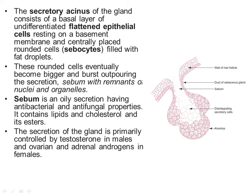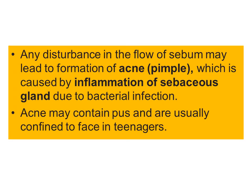The secretory acinus consists of a basal layer of undifferentiated flattened epithelial cells resting on the basement membrane, and centrally placed rounded cells called sebocytes filled with fat droplets. These rounded cells eventually become bigger and burst, pouring out secretions — sebum — with remnants of nuclei and organelles. Sebum is the oily secretion with antibacterial and antifungal properties, containing lipids, cholesterol, and esters. Secretion is primarily controlled by testosterone in males and ovarian and adrenal androgens in females. Applied anatomy: any disturbance in the flow of sebum may lead to acne, caused by inflammation of the sebaceous glands due to bacterial infection, usually confined to the face in teenagers.